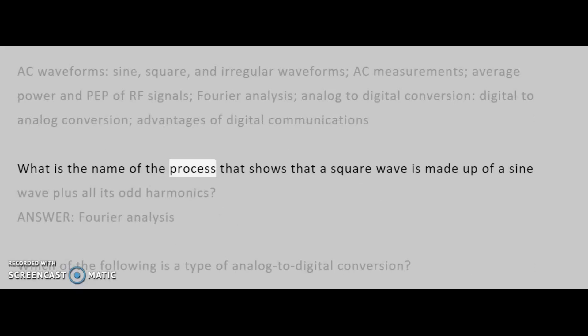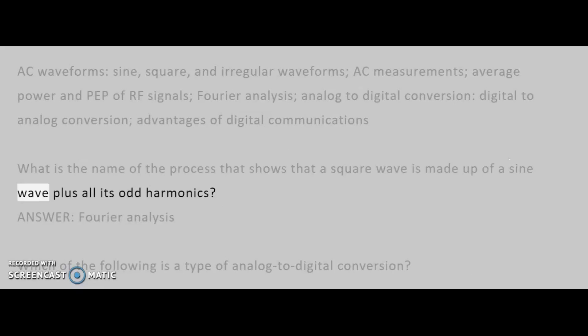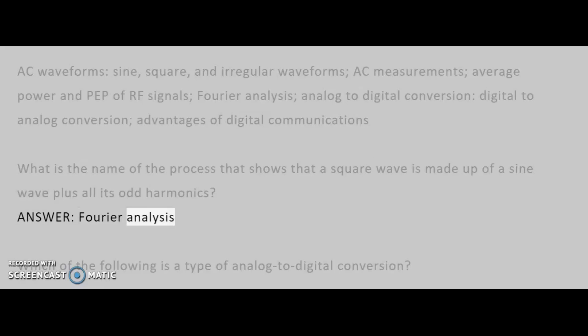What is the name of the process that shows that a square wave is made up of a sine wave plus all its odd harmonics? Answer: Fourier analysis.